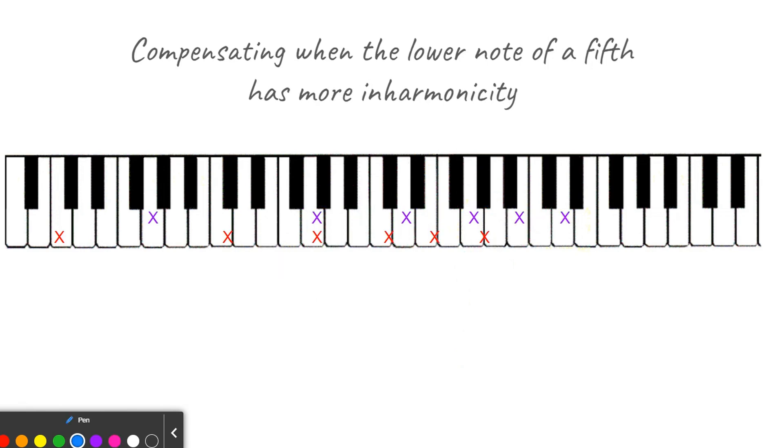So then we have the opposite situation. If the lower note of the fifth has more inharmonicity, I'm going to tune the first coincident partial closer to pure, because this one will definitely be narrow, and if it is extremely narrow, I'm going to want to have this first one closer to pure.